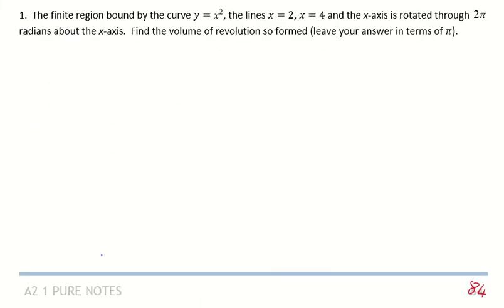So in this example, it says a finite region bound by the curve y is equal to x squared, the lines x equals 2 and x equals 4, and the x-axis is rotated through 2π radians about the x-axis. Find the volume of revolution formed. Leave your answer in terms of pi. So let's just do a diagram here.